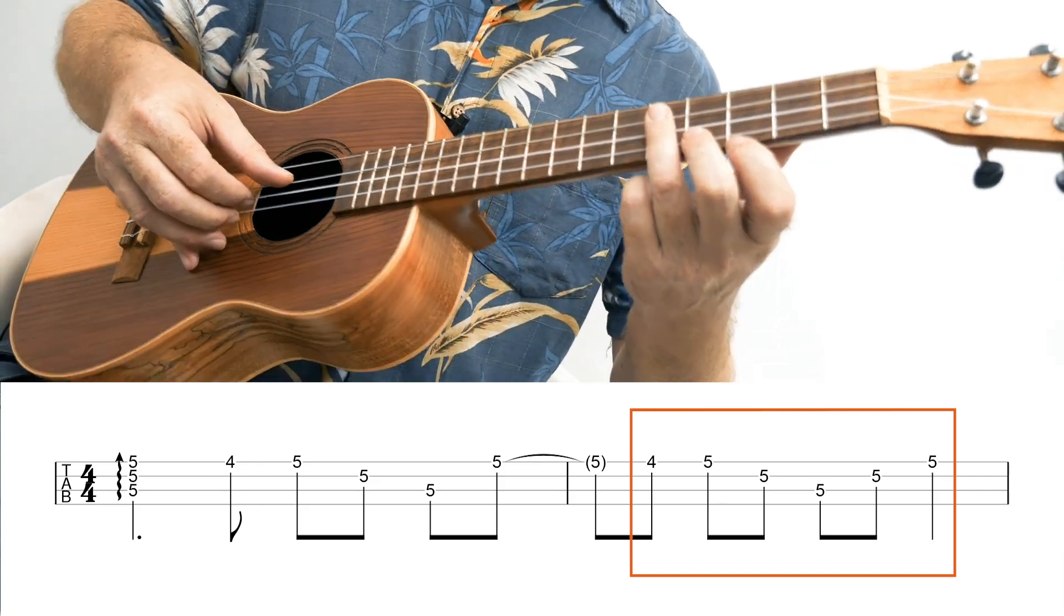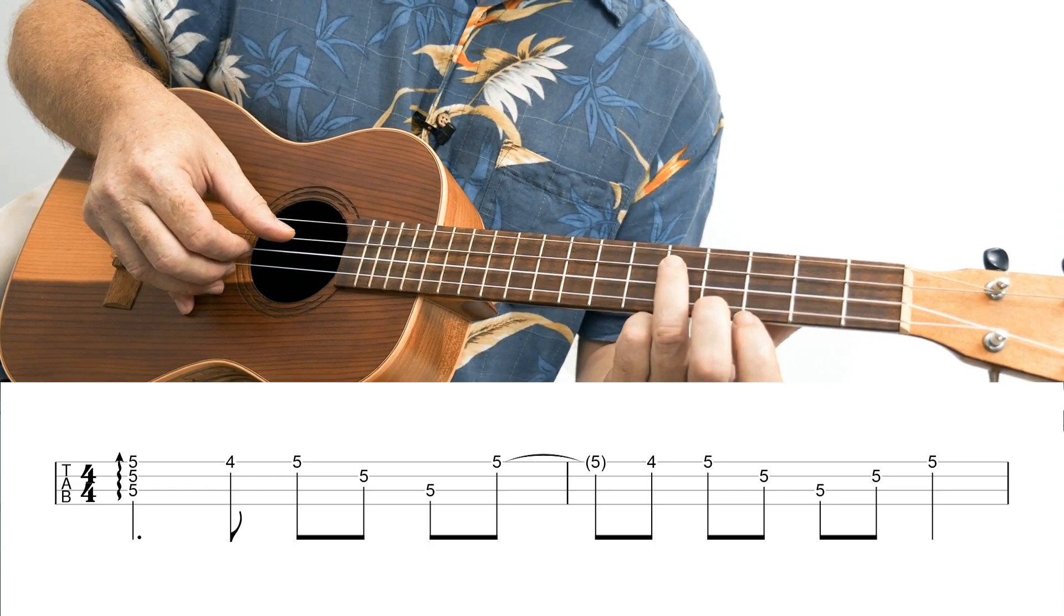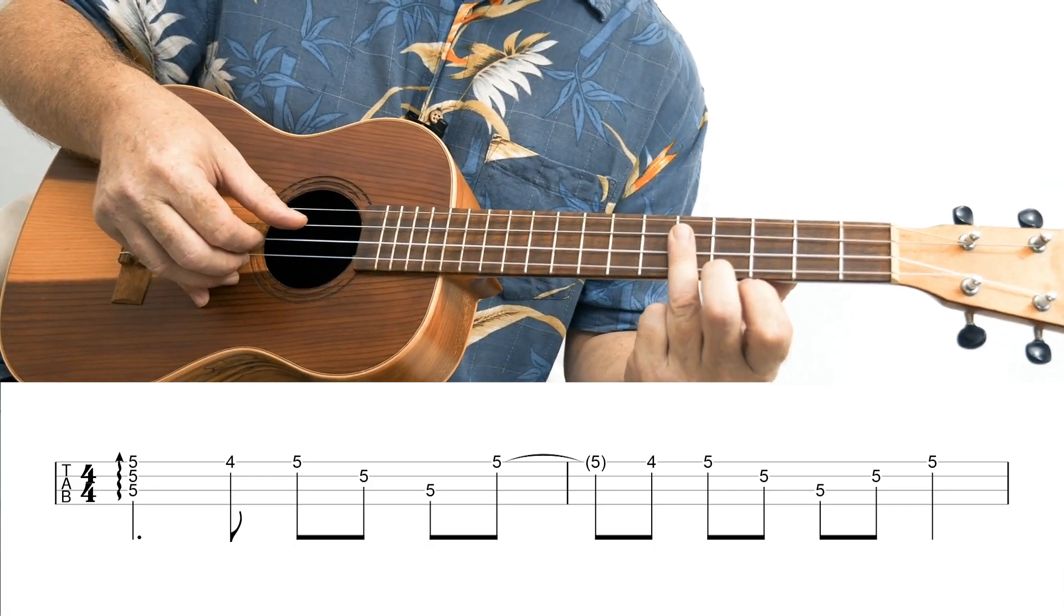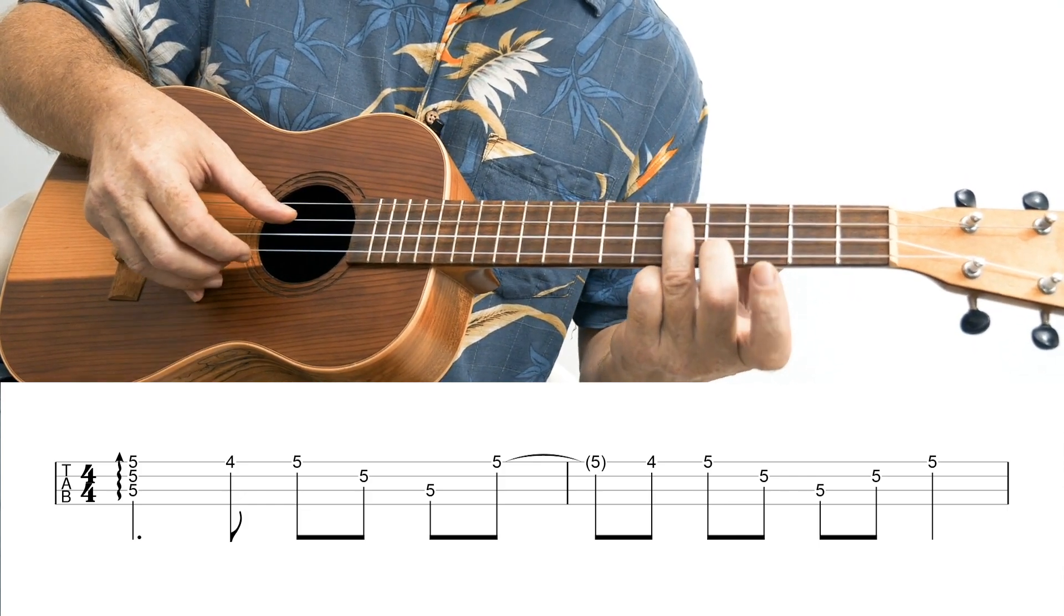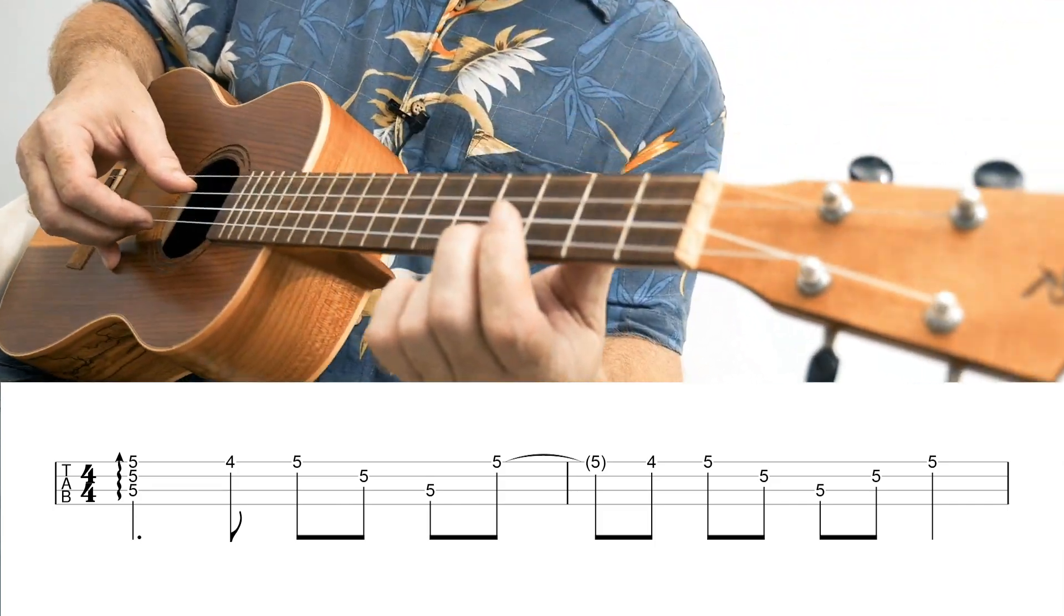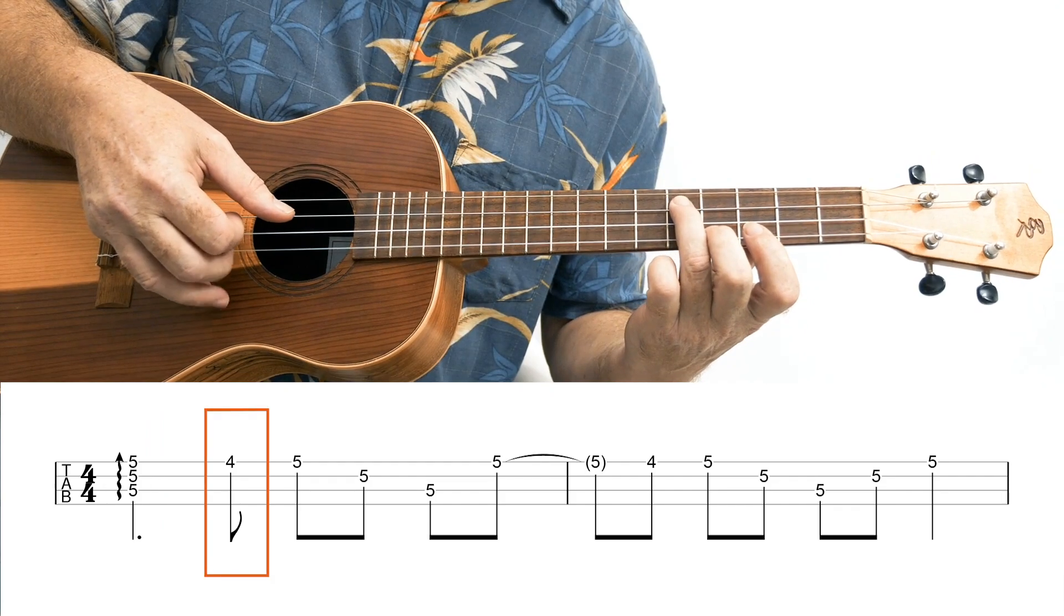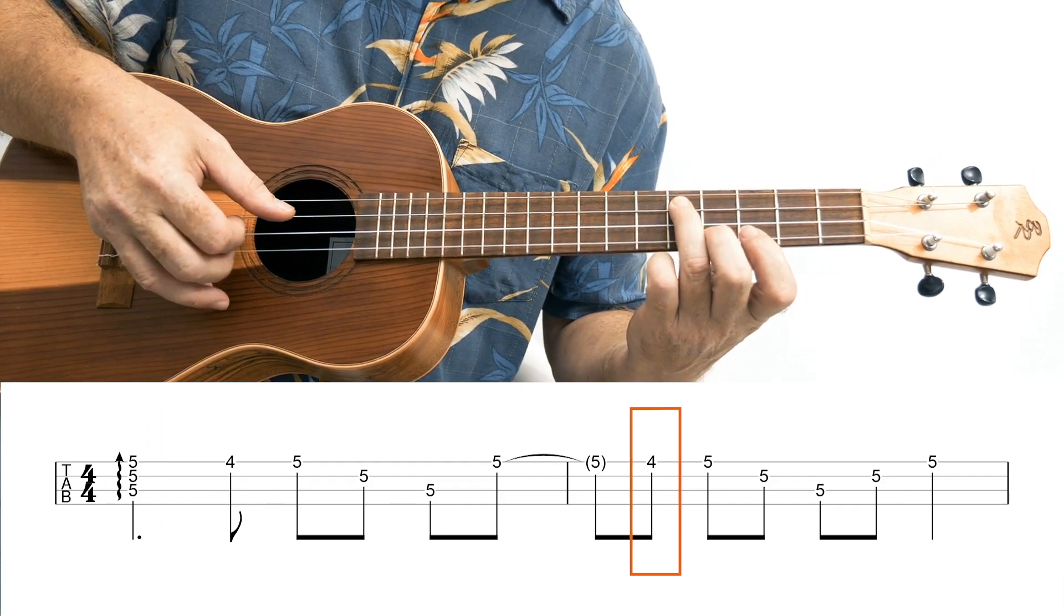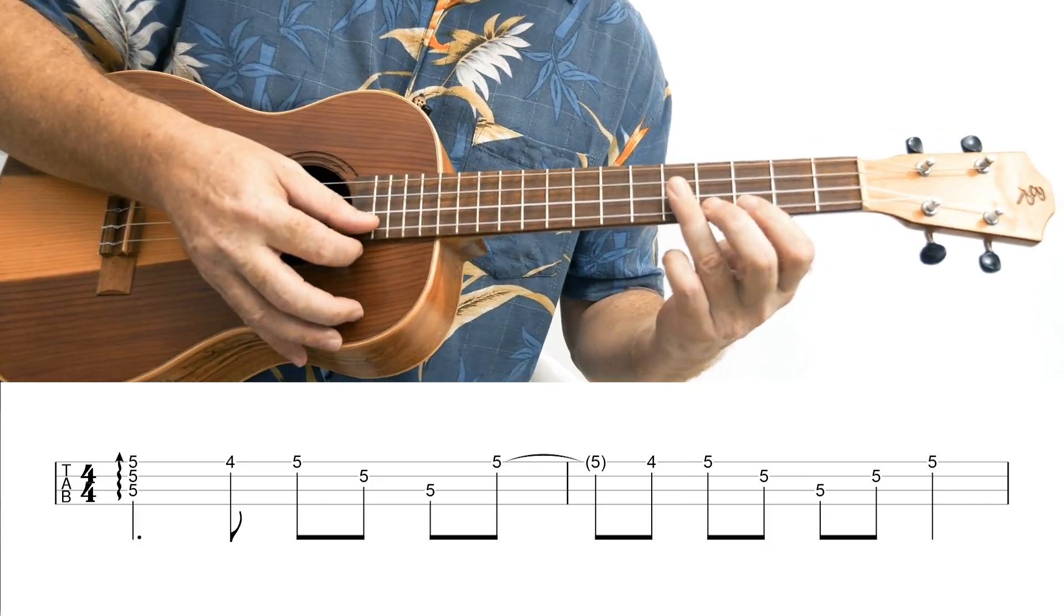So you're just lifting your ring finger ever so slightly to open underneath for your second finger. There. Can I get a better angle? I probably can't. Just watch what I'm doing here. And then we have this cool little figure.